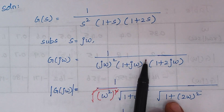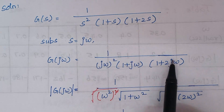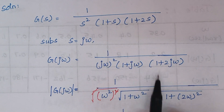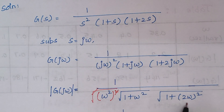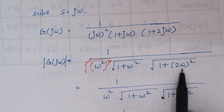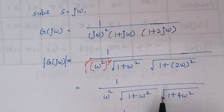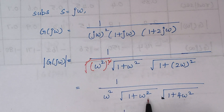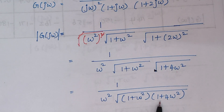The square root of the real term is 1, 1 squared is 1, and square root of ω gives ω squared. Similarly, square root of 1 becomes 1 and (2ω) squared. This (2ω) squared, when solved, becomes 2 squared which is 4, and ω squared. I am having two expressions under the square root, so I am going to combine them as: ω squared into square root of (1 plus ω squared) into (1 plus 4ω squared).